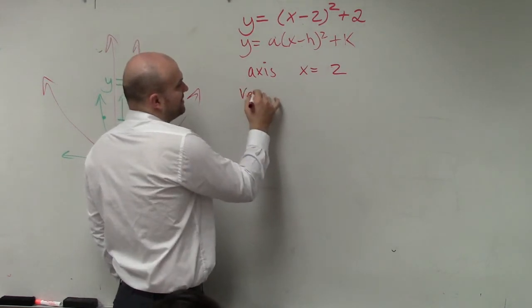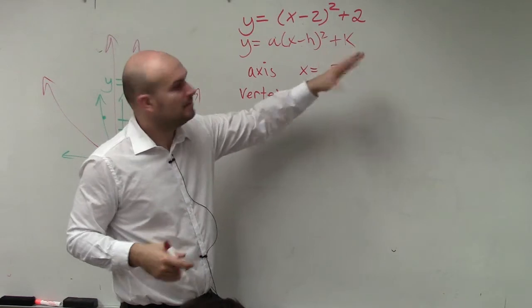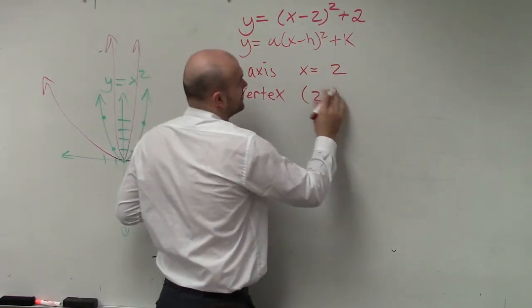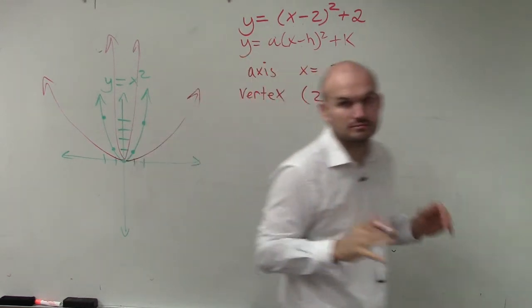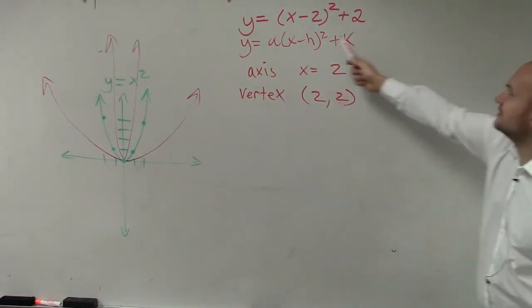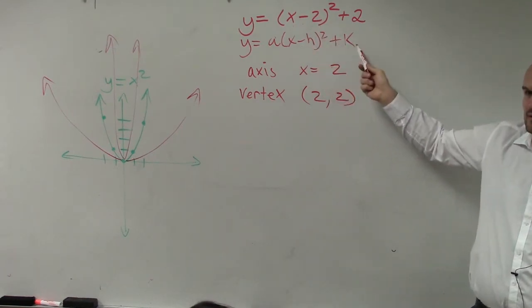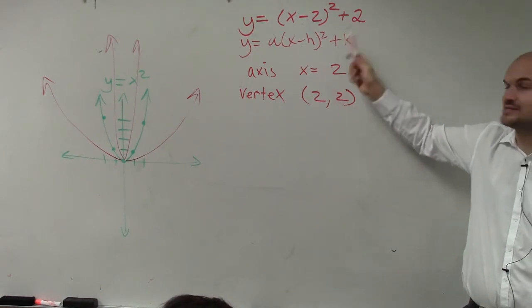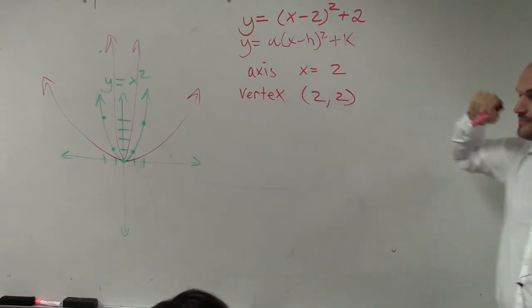The next thing is to identify the vertex. The vertex, remember, is just h, k. But k is in its own format. Correct. So therefore, h, k is just 2 comma 2. Because this is x opposite of h, and then it's just k. So whatever your value is, if it's plus, it's plus. If it's minus, it's minus. This just tells you to take the opposite of the sign, whatever you see in there. You're going to take the opposite of it. So your vertex is 2 comma 2.